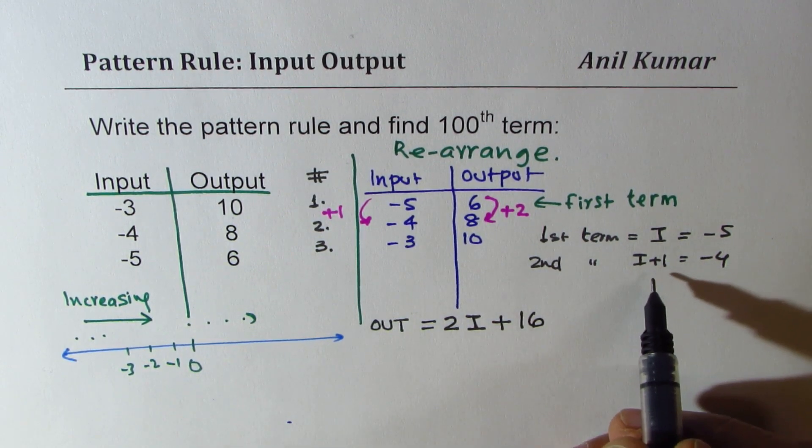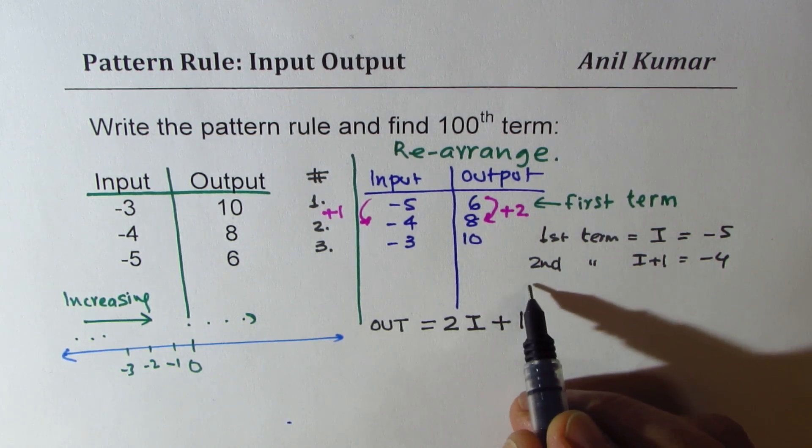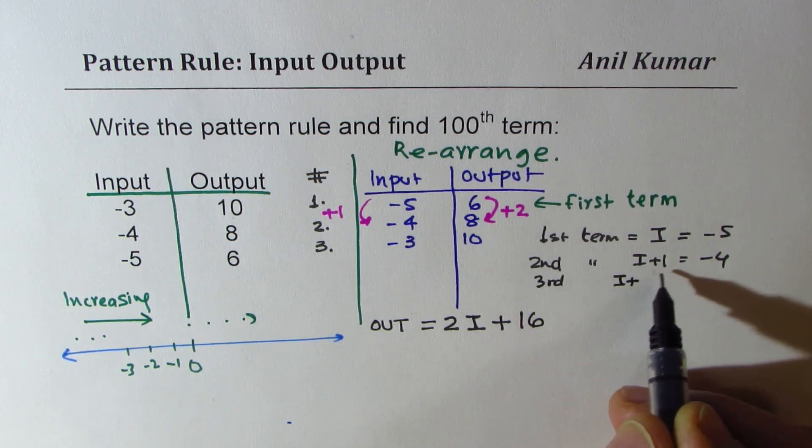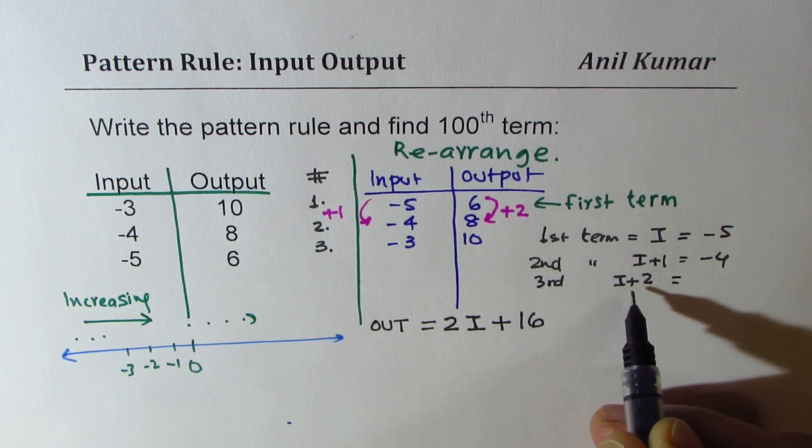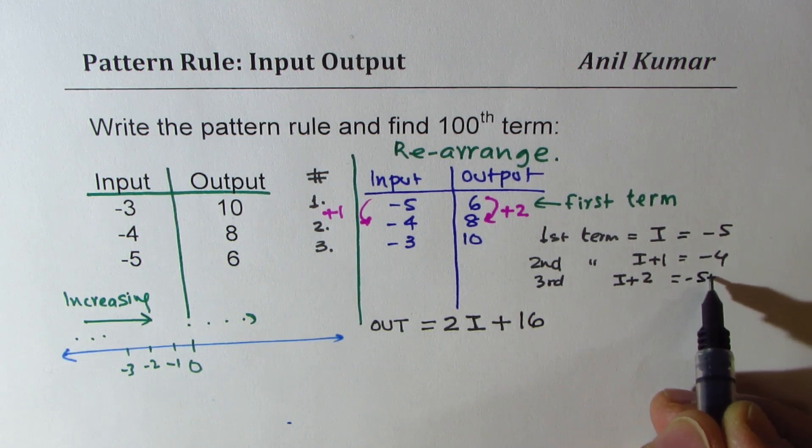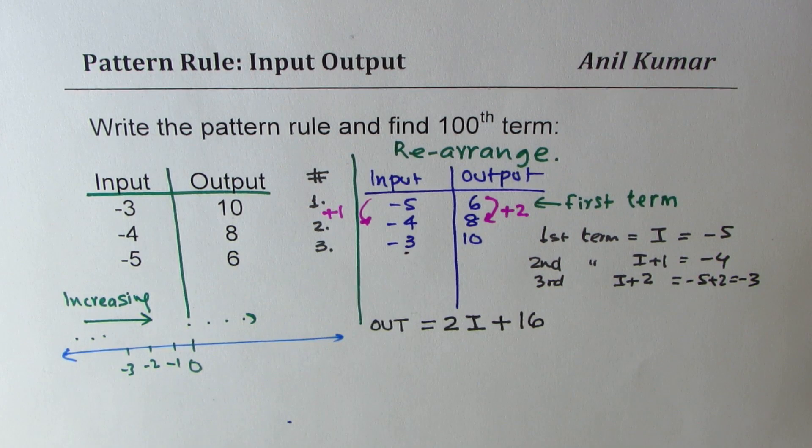So the third term will be I plus two, one less than three. So I can say I plus two which is one less than three. So I is minus five, so minus five plus two gives me minus three. So that is the third term.